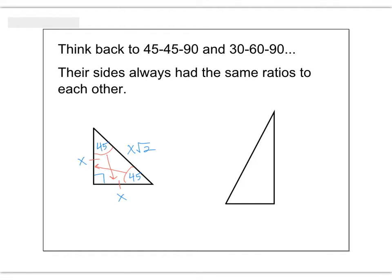The other special right triangle we studied was the 30-60-90. Imagine we have a 30-degree angle, a 60-degree angle, and a 90-degree angle. The shortest side is across from the smallest angle — that's your short leg, called x. We double it for the hypotenuse, so it's 2x. The hypotenuse is across from the 90-degree angle and is the longest side. The long leg is whatever the short leg was times root 3, so the ratio is x to 2x to x root 3.